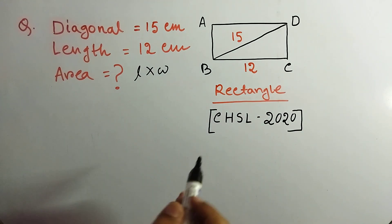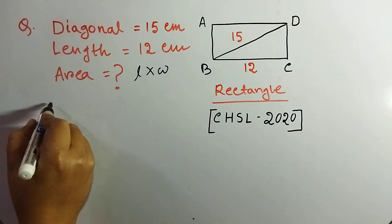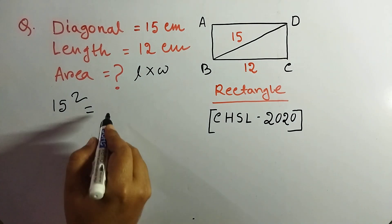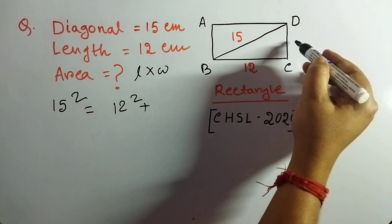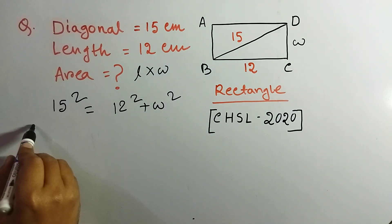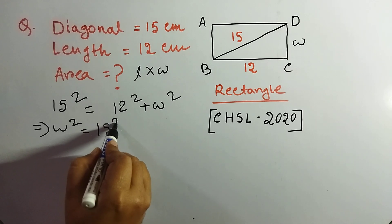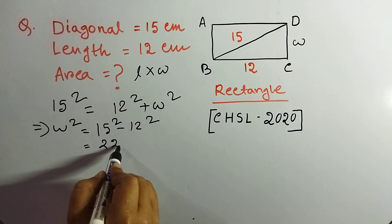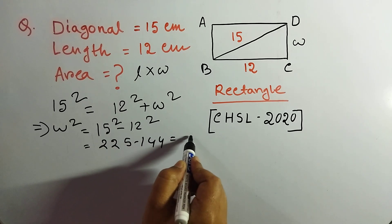So now look at this. BCD, this is a right angle triangle. So we can write 15 square equal to 12 square plus, if we call it as W, then W square. Then W square equal to 15 square minus 12 square, that is 225 minus 144, that is 81.